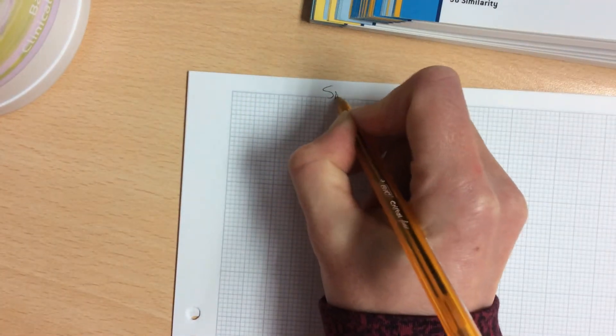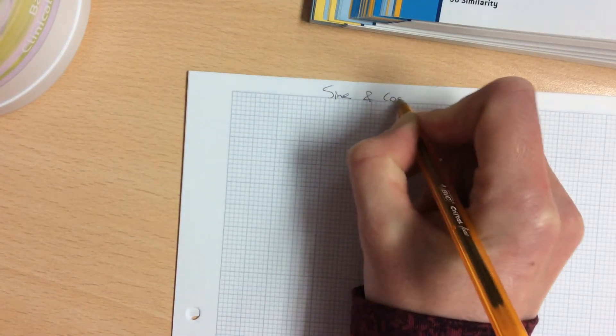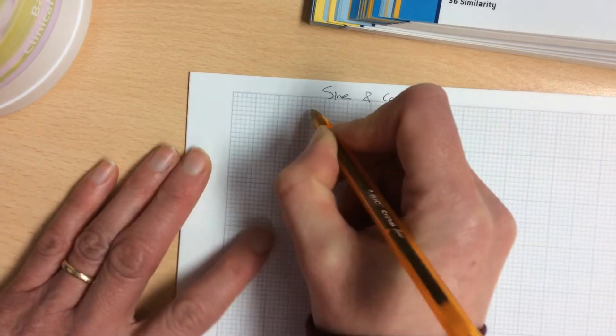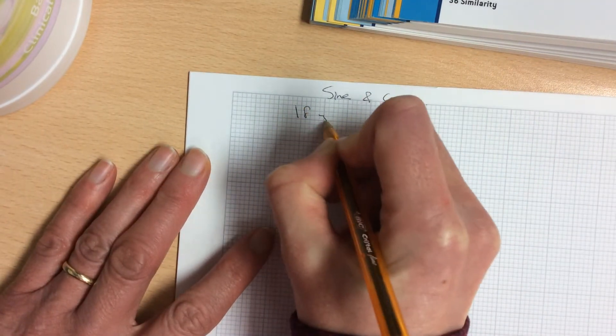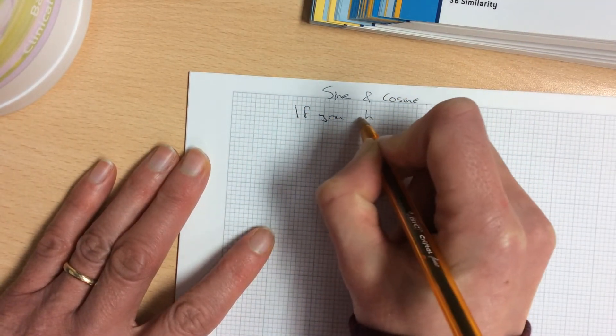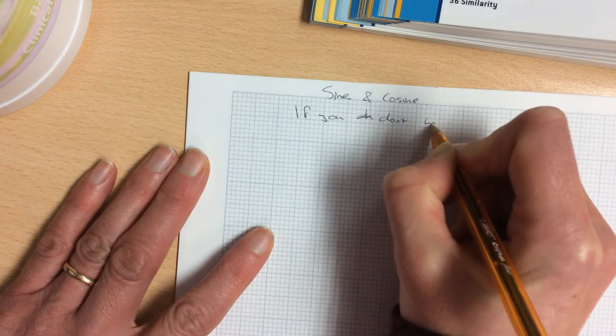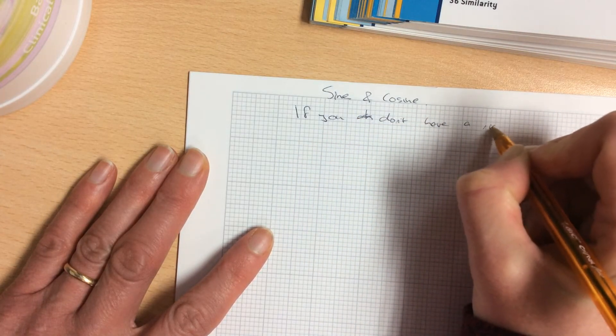Today we're going to look at two new rules: sine rule and cosine rule. You use these if you don't have a right angle triangle.